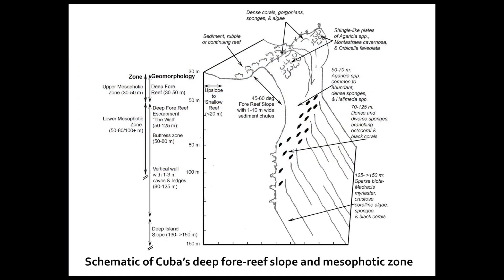Mesophotic reefs are deep reefs that extend from depths of 30 meters to over 125 meters. The deep island slope generally occurs at depths of 125 meters to over 150 meters. The deep reef escarpment, or wall, occurs at depths of 50 to 125 meters. The deep fore reef occurs at depths of 30 to 50 meters. This video highlights ROV transects up the wall from 150 meters to the shelf edge reefs at 30 meters.